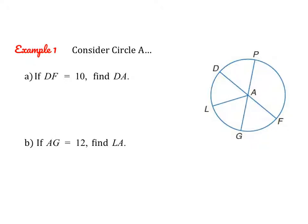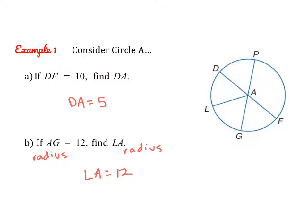Let's use those two statements to find some different lengths. In circle A, A is the center. DF is 10 — that entire distance — so DF is a diameter. We'd like to find DA, which is half the diameter. Since the diameter is twice as long as the radius, DA is 5. Here, AG is 12 and we want to find LA. Since all radii are equal distance, LA is also 12 because AG and LA are both radii.